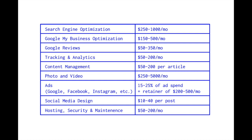The next thing on the list is tracking and analytics. This one is pretty straightforward, but people love to understand what's going on with their website — how many people are coming to the site, what the behavior of those visitors is, what pages they're visiting, how long they're spending on individual pages, and what buttons they're clicking. This type of tracking and analytics is a great way to manage and keep an eye on the productivity of the website.